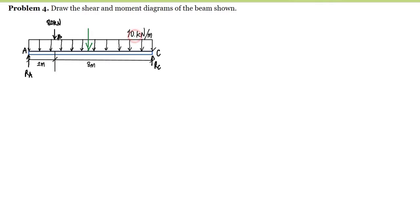We have an intensity of 10 kilonewton per meter and a length of 10 meters, so the resultant is 100 kilonewtons. This 100 kN acts at midspan, so if the total span is 10 meters, this is equal to 5 meters. To compute for the reaction at C, we take the summation of moments at point A.